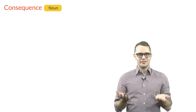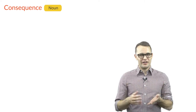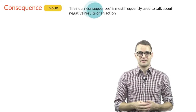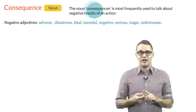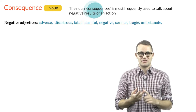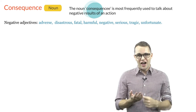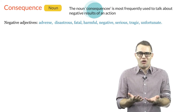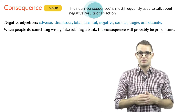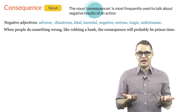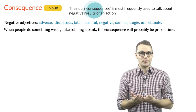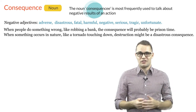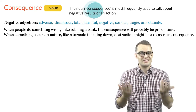Another word that has a similar meaning to result is consequence. However, the noun consequence is normally used to talk about negative results. It is commonly used with words like adverse, disastrous, fatal, harmful, negative, serious, tragic, or unfortunate. For example, when people do something wrong, like robbing a bank, the consequence will probably be prison time. Or when something occurs in nature, like a tornado touching down, destruction might be a disastrous consequence.